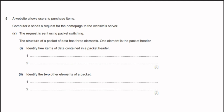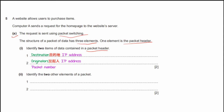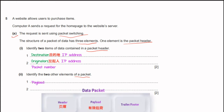Question number 5. A website allows users to purchase items. Computer A sends a request for the homepage using packet switching. The structure of a data packet has three elements. Two items found in the packet header are: destination address, originator IP address, and packet number. The three elements of a packet are: the header, the payload, and the trailer (or footer).